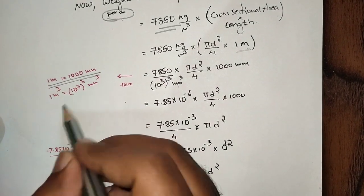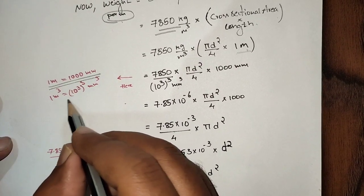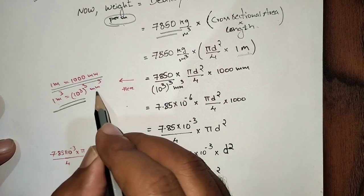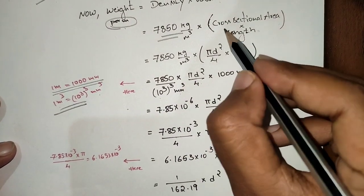That's the reason why we are giving here. Now πd²/4 is the cross sectional area. We know that steel bar is in circular shape and area of circle is πd²/4.